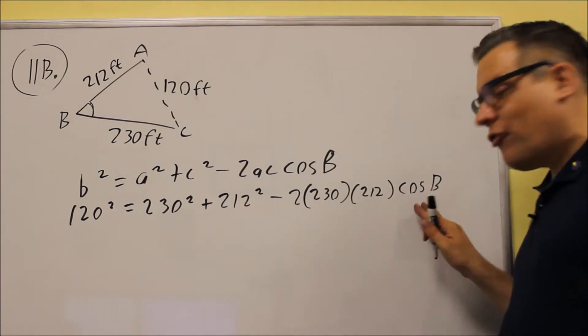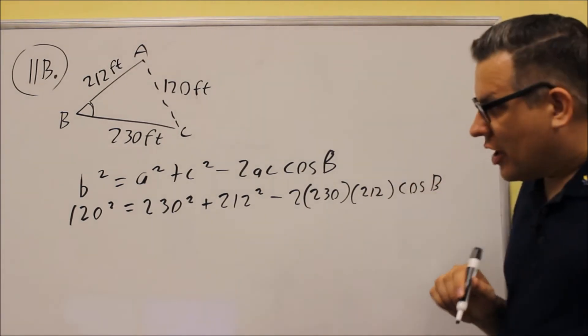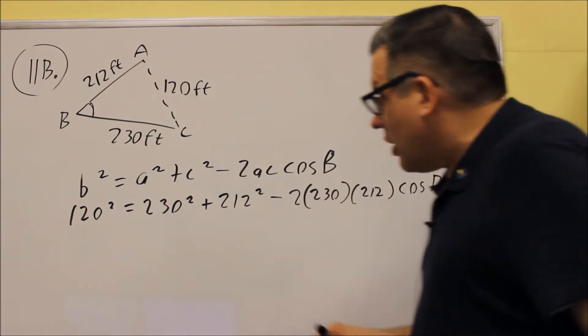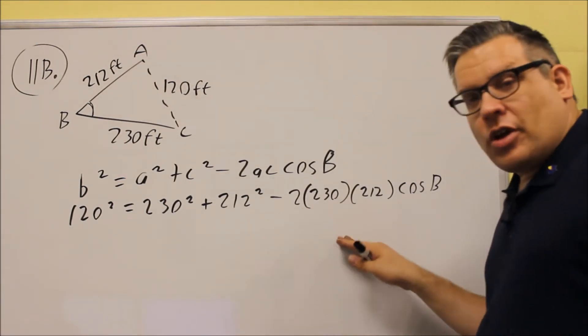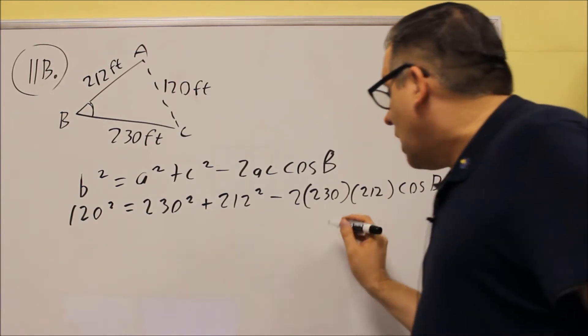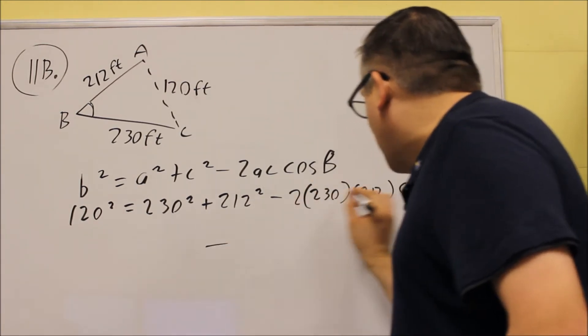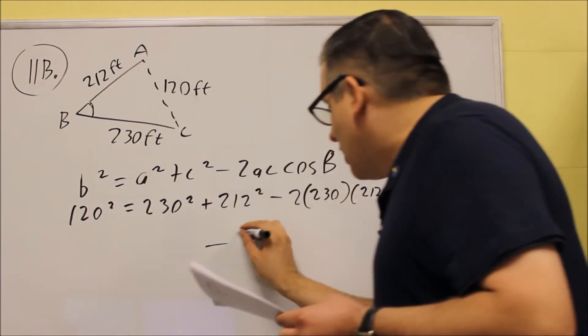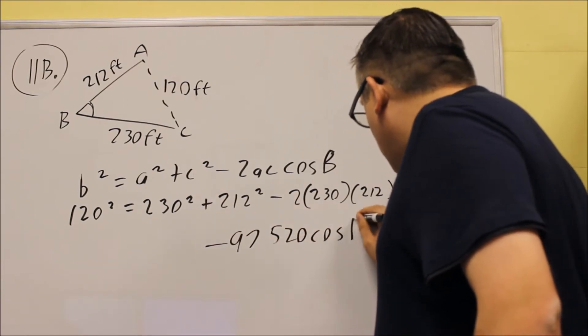We want to solve for cosines B, and when we're done, we're going to take the inverse cosines. So, we'll kind of go through step by step here. Now, what I'm going to show here is I'm going to do a couple things at once. First, I'm going to multiply this together. If I multiply 2 times 230 times 212, that's going to be negative 97520 cosines B.